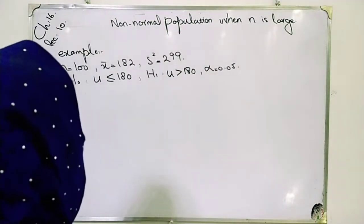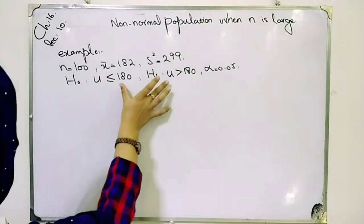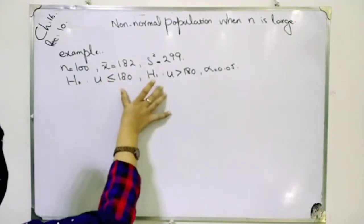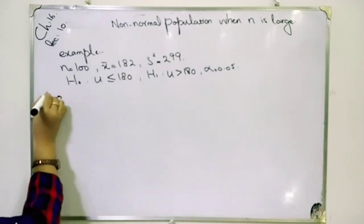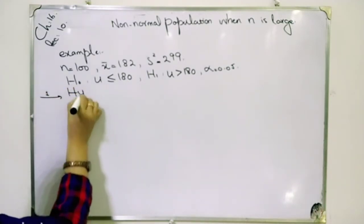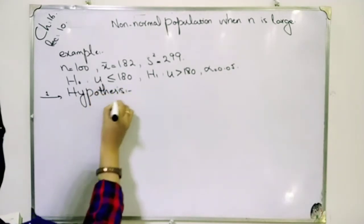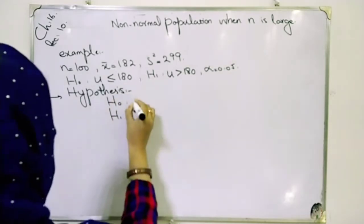In this question you have given everything. You have to find a statement of H0 and H1 as given in the question. Now in this case, what is the first step? You have to make hypothesis with the two types: H0 and H1.